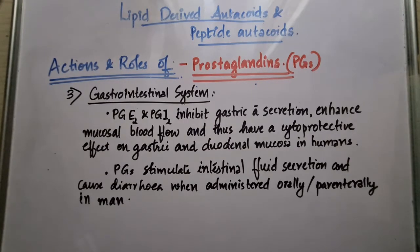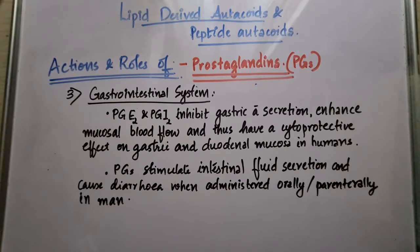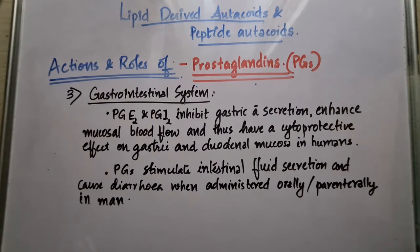The action of prostaglandins on the gastrointestinal system: prostaglandins are distributed throughout the gut but their concentration varies in different parts. PGE2 and PGI2 have a cytoprotective effect on gastric and duodenal mucosa in humans because they inhibit gastric acid secretion and also enhance mucosal blood flow. These prostaglandins also stimulate intestinal fluid secretion and cause diarrhea if administered orally or parenterally.